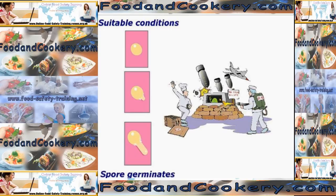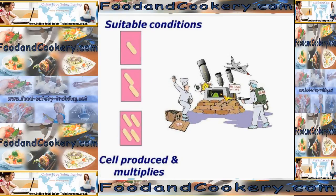If you look at the graphic in front of you, given suitable conditions such as moisture and warmth within a temperature danger zone, a spore will germinate into another bacterium. And since that spore has now germinated, that one bacterium will start to multiply into 2, 4, 8, 16, etc., with suitable conditions.